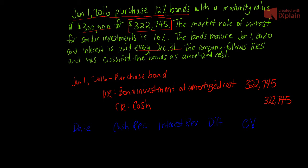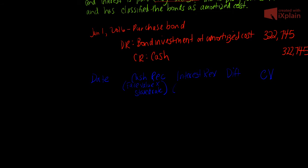Cash received is the coupon — face value times the stated rate. This is what is specifically on the paper when we obtained ownership of the bond. Interest revenue is the carrying value of the bond times the market rate. The difference (A minus B) is the amortization of the premium or discount, and the last column is simply the carrying value of the bond.